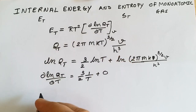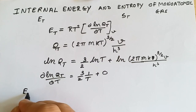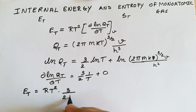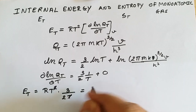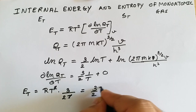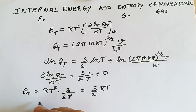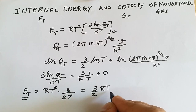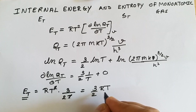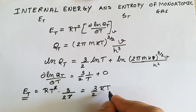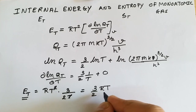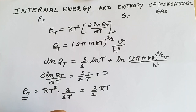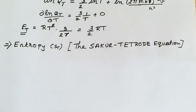Substituting this value into the energy equation, we get E_t = RT² × 3/(2T). The T terms cancel, and hence we have E_t = (3/2)RT, where R is the universal gas constant and T is the temperature of the system. Knowing T and R, we can easily calculate the translational internal energy.